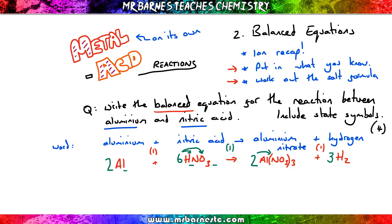And then all that's left is your state symbols — don't forget that if it asks you for it. Aluminium is a metal, it's a solid. Nitric acid — all acids are aqueous. Your salt — all nitrates are soluble, so aqueous. And hydrogen, as we said, is a gas — that gets you your fourth mark.